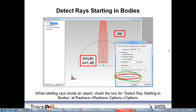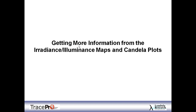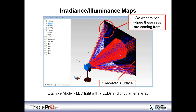Let's spend a little time talking about irradiance and illuminance maps and candela plots. The only difference between an irradiance map and an illuminance map is units: irradiance is radiometric — watts or watts per meter squared — while illuminance is photometric, using visible light units like lux, lumens, and foot-candles. They provide similar information, just one in radiometric and one in photometric units. If you want to dig deeper into the units, we did a recent webinar on radiometry and photometry in TracePro available on our website.